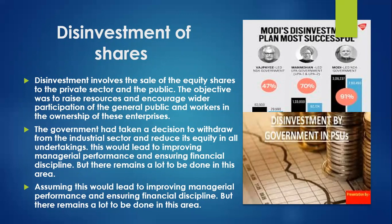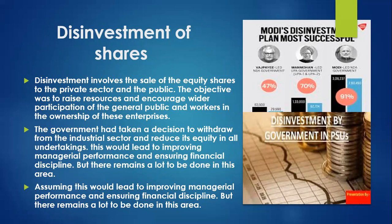There remains a lot to be done in this area still. Many sectors have yet to be disinvested and the government is still playing a role. Checking the stats: under the NDA government, the disinvestment plan was 47% successful; under the UPA government it was 70%; and at present it is showing 91%. The government is continuously in the process of disinvestment so they can use these funds for welfare projects. Whenever disinvestment happens and there is more competition in the economy, it always helps us as consumers or end users.